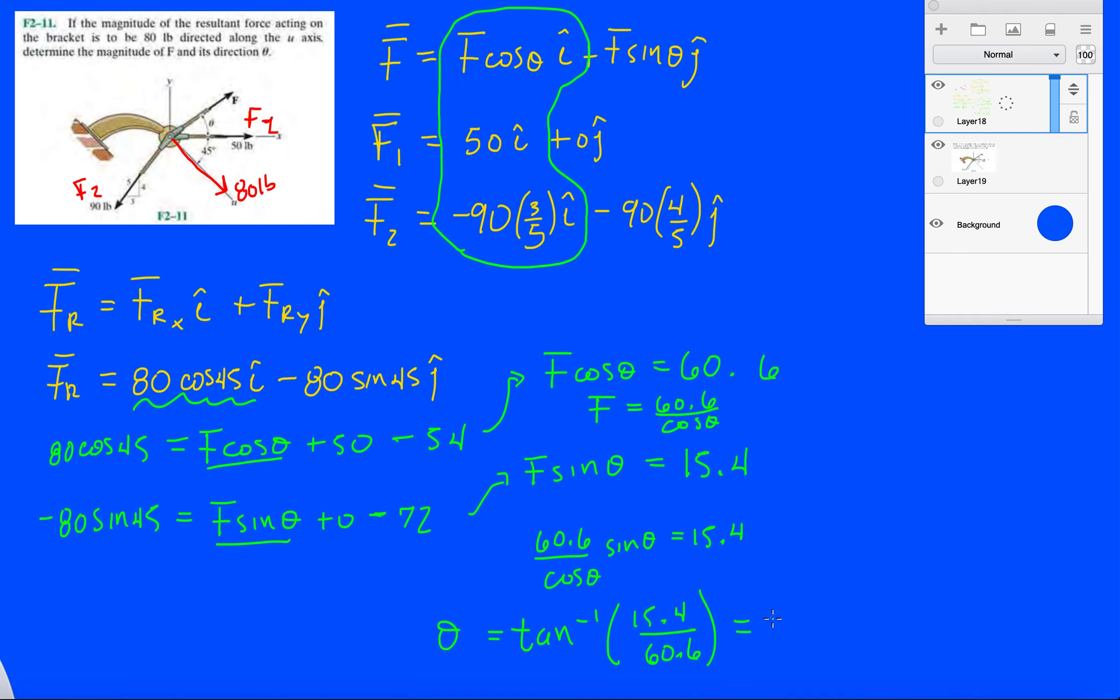That gives us theta of 14.3 degrees. Let's leave it at that. And now let's figure out what F is. So F will be 15.4 divided by sine 14.3, and F is 62.3 pounds.